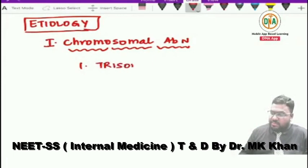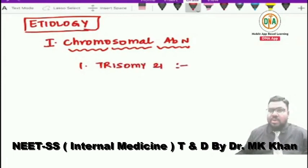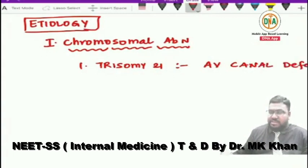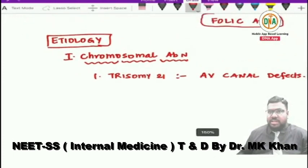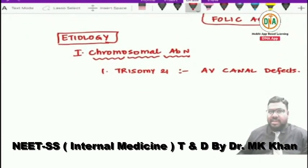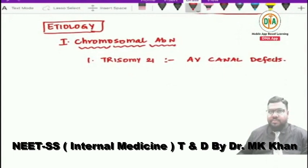Trisomy 21, or Down syndrome, is associated with atrioventricular canal defects — AV canal defects. Please remember this point.